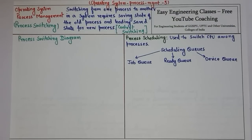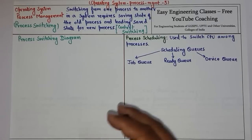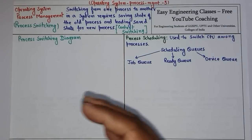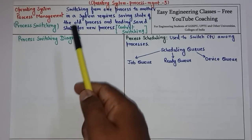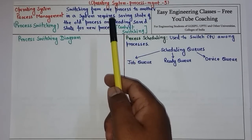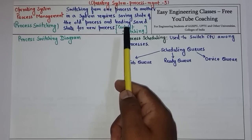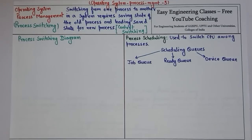In this video we are going to see the concept of process switching and process scheduling. Process switching means if there are multiple processes running in a system, there may be a chance that one process needs to preempt the processor and another process can get the processor for execution. Switching from one process to another requires saving the state of the old process and loading the saved state for the new process.